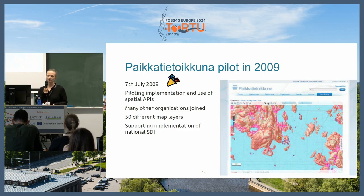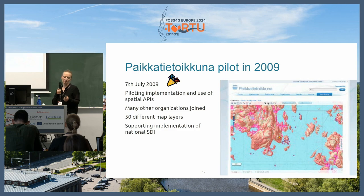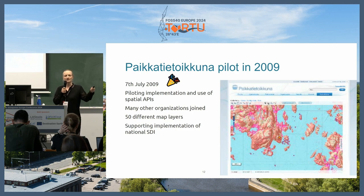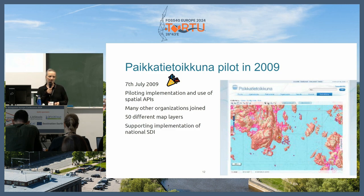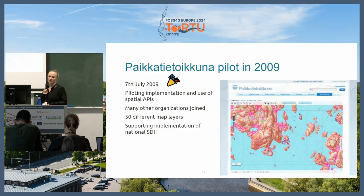So 2009 was the Paikkatietoikkuna pilot — 7th of July — so on Sunday we'll have its 15th birthday actually. This pilot would continue not only creating this geo-portal but also piloting the implementation of different kinds of APIs, because that was also a new thing. You would have to support a lot of these different organizations so they could actually implement their APIs. When it was published, there were 50 different map layers — a long way from where we are today with 3,400 different map layers.